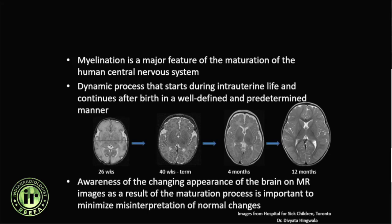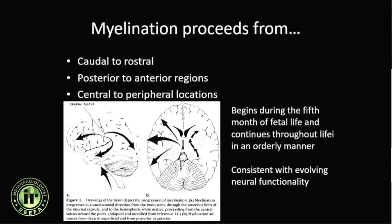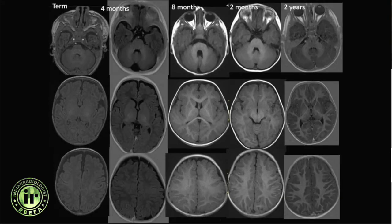In a very simplified manner, we need to remember that myelination progresses from caudal to rostral, from posterior to anterior, and from the center to the periphery. This is consistent with evolving neural functionality. There are some exceptions to this rule. Myelination is first seen on T1-weighted images in term neonates.